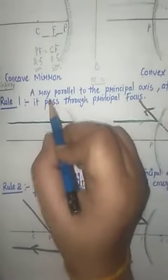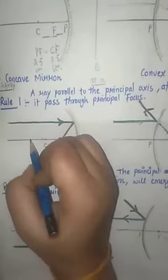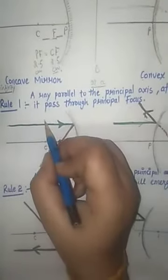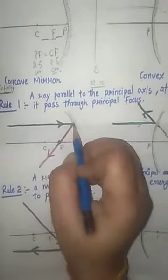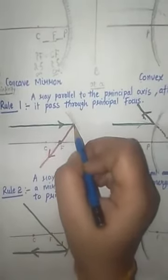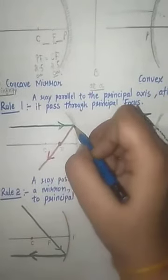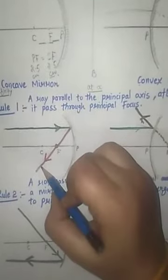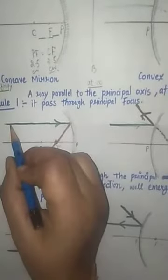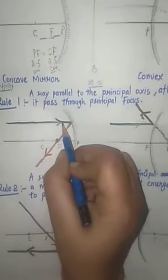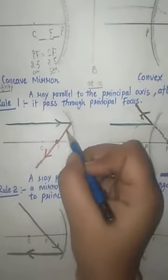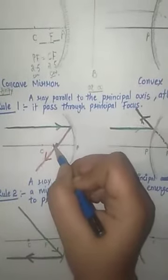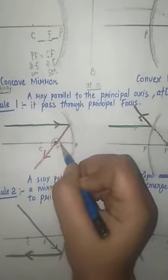Rule number one: a ray coming parallel to the principal axis, when it strikes the mirror, gets reflected and passes through the principal focus. That means when a ray comes parallel to the principal axis, after reflection it passes through the principal focus F.